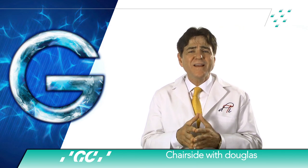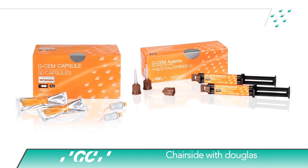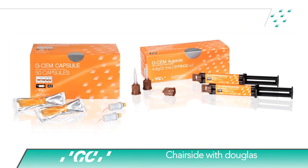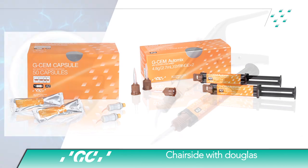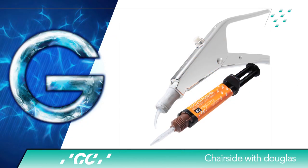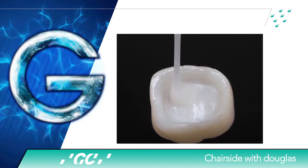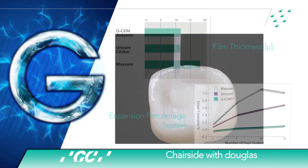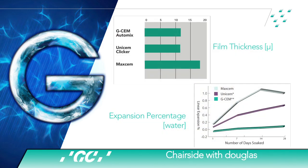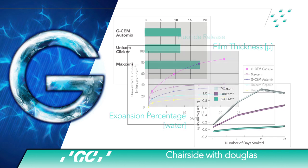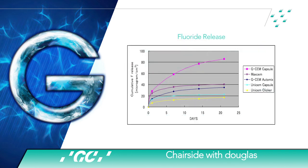A recently developed self-adhesive resin system, GCM, may be a superior cement system and possess many of the prerequisites of an ideal luting cement. It possesses the lowest film thickness and linear expansion of any self-adhesive system and provides the highest fluoride release.